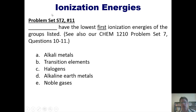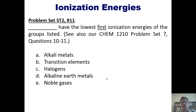Here's another one: which of the following has the lowest first ionization energies of the groups listed? Remember, the answer is going to be the category of elements that most wants to give up its first electrons. That takes us to the end of this subject. Let's move on to the next one, which is sizes of atoms, also known as atomic radii.